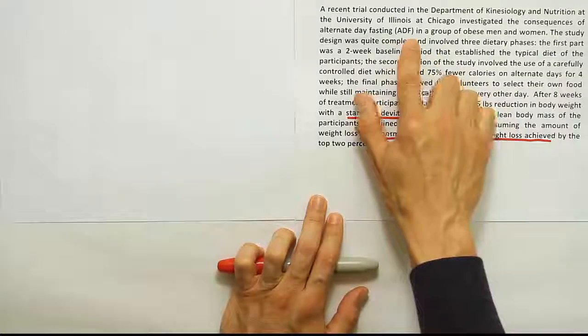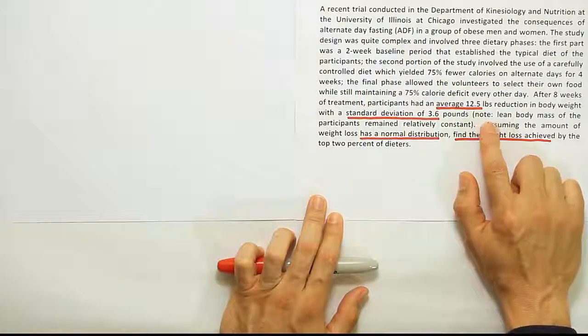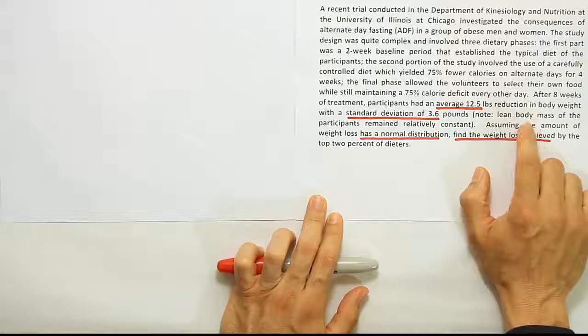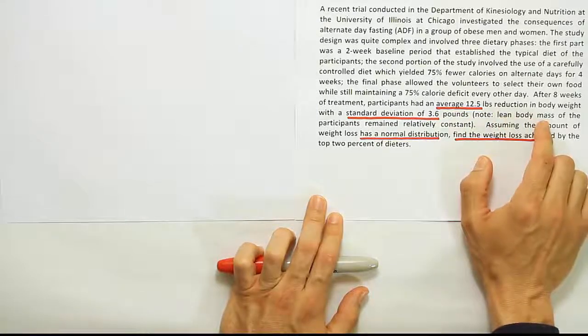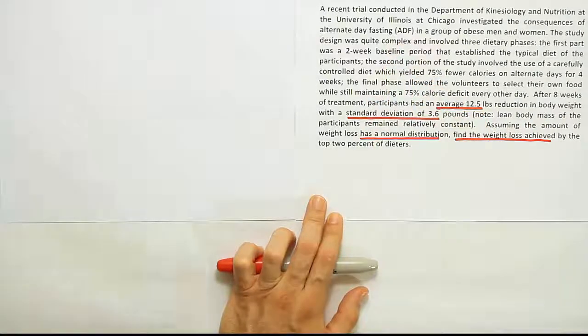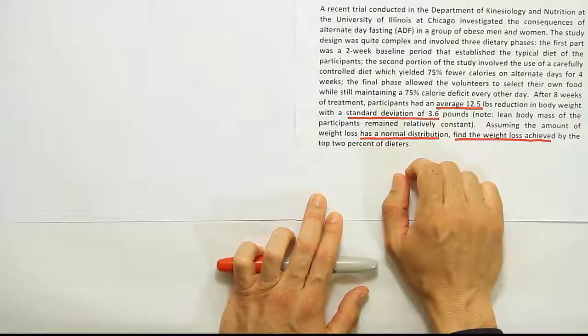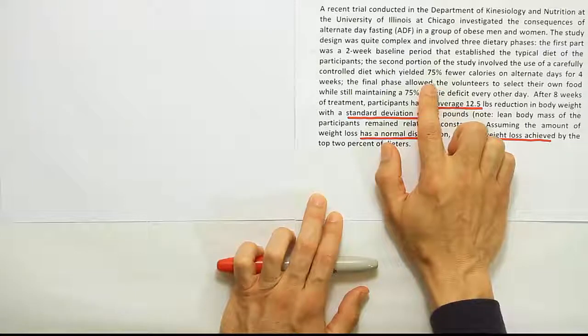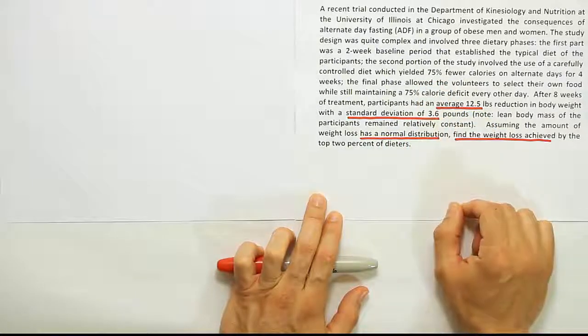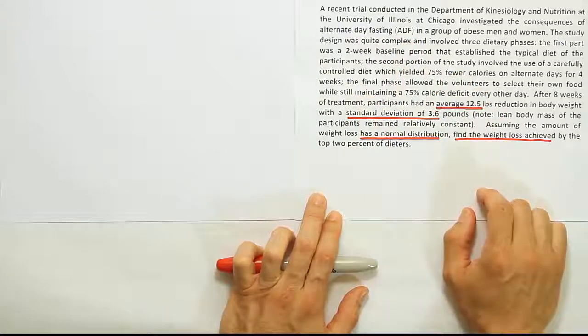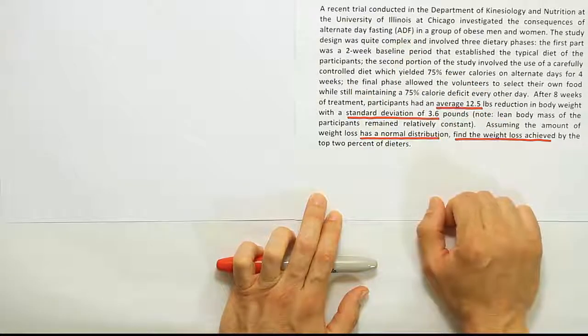This diet, the ADF approach to dieting, maintains lean body mass. That's pretty impressive to lose this much weight and still keep lean body mass intact. So again, if you read through the thing, the alternative day fasting diet requires you to every other day reduce your calories by 75%. That's quite a big reduction. So it's basically fasting on those days that you have to do that. But overall, the diet is very effective.